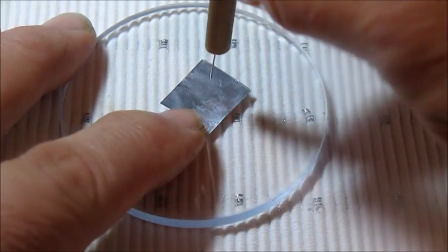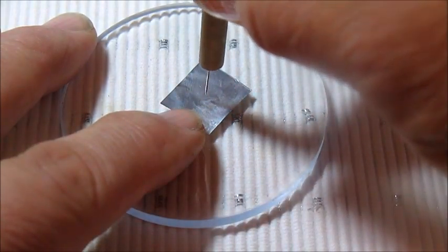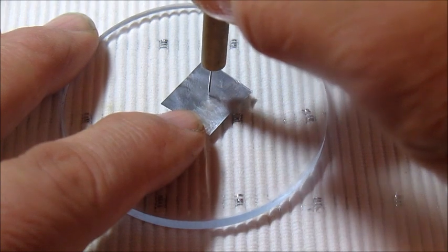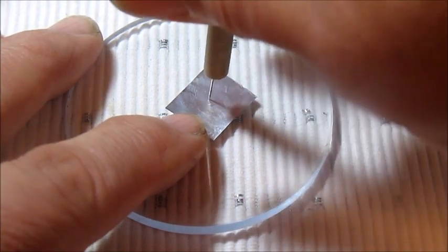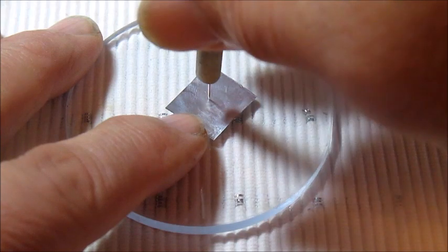The best technique I found was to just barely touch the aluminum foil and then spin the dowel just like a drill bit.